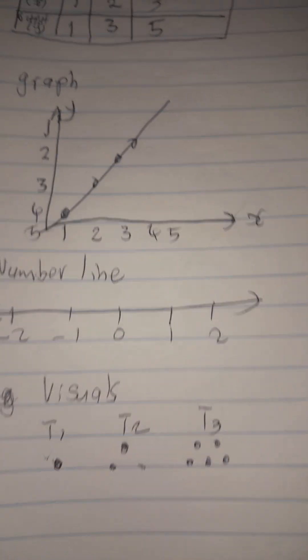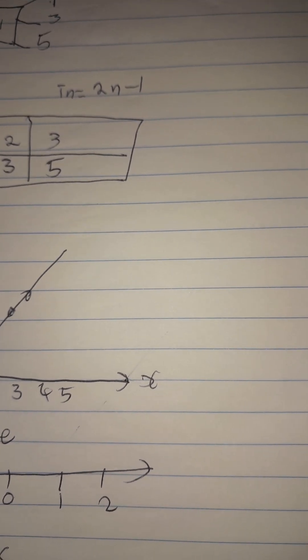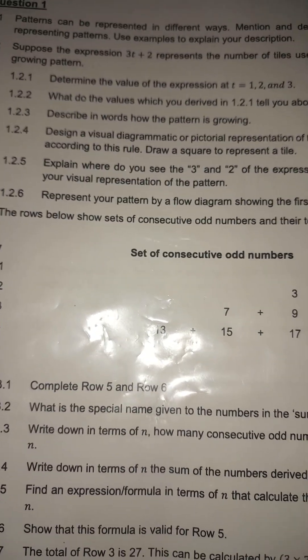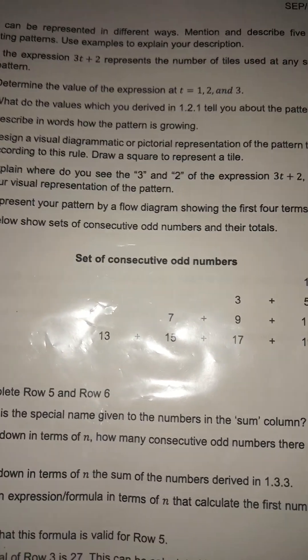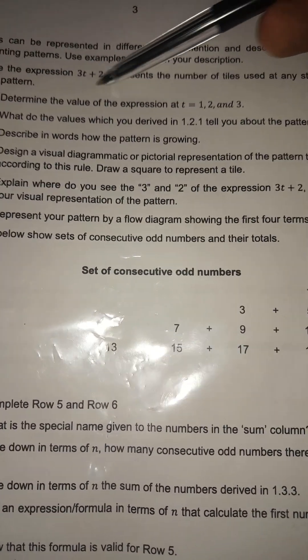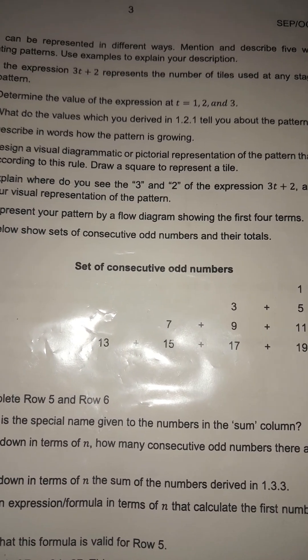That's how you can represent your pattern in different ways. Now we are going to work with 1.2. At 1.2.1, they say: suppose the expression represents the number of tiles used at any stage of a growing pattern — determine the value of T1, T2, and T3. So where we see T, we will substitute 1, 2, and 3.